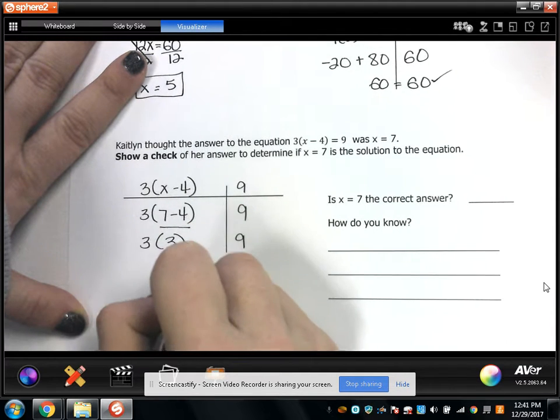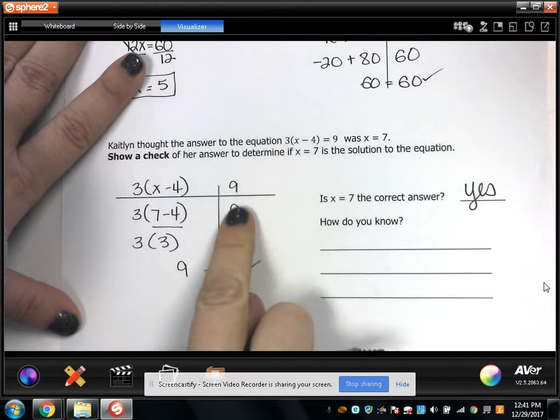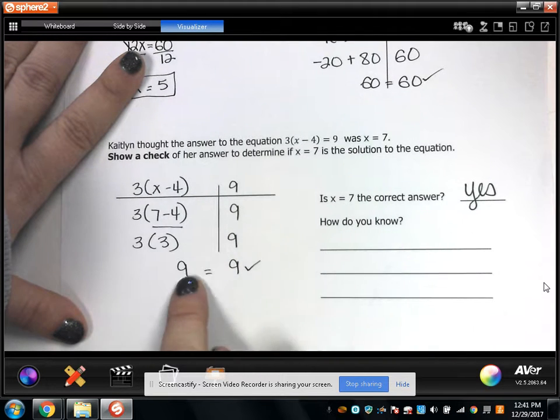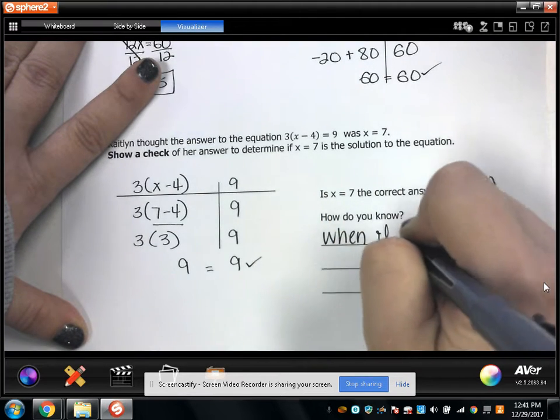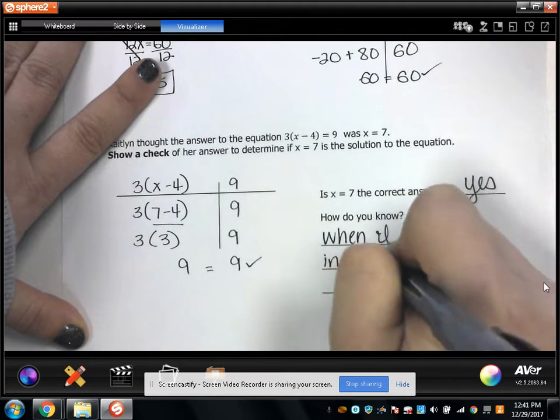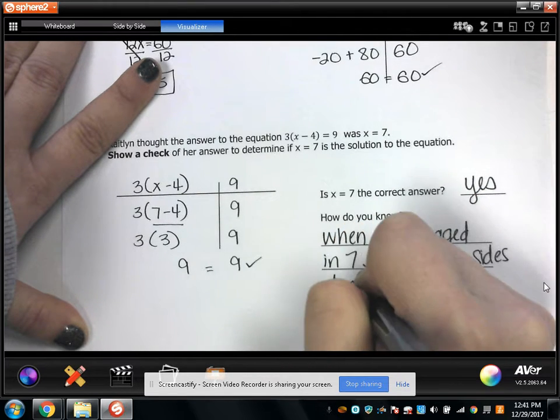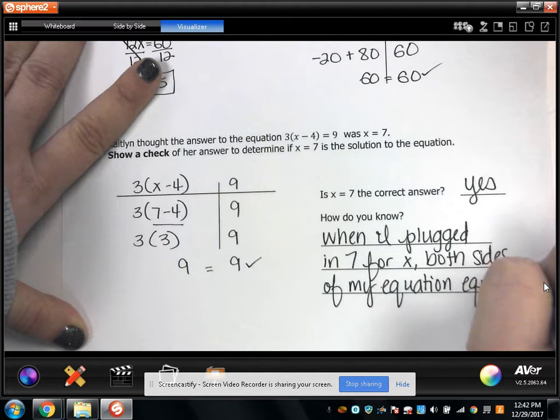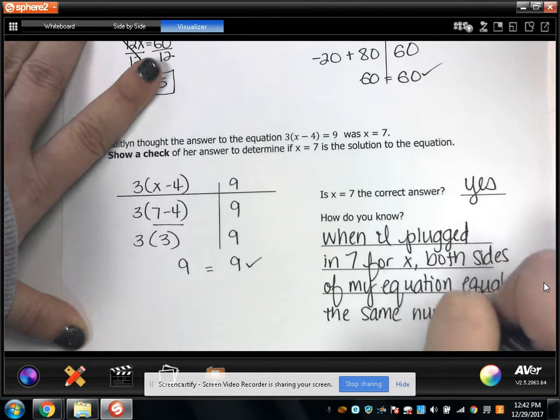9. 3 times 3 is 9. So was her answer correct? Yes. How do I know? Well, my check worked out. When I checked, when I plugged in 7 for all values of x, both sides of my equation equal the same number. So when I plugged in 7 for x, both sides of my equation equaled the same number, which was in this case 9.